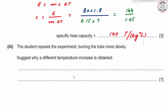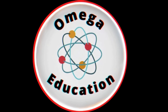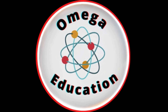The student repeats the experiment turning the tube more slowly. A different temperature increase is obtained because when turned slowly, the metal pieces have more time to cool down to the surroundings between turns. As their temperature would be dropping more between each turn, the overall temperature change recorded would be different.